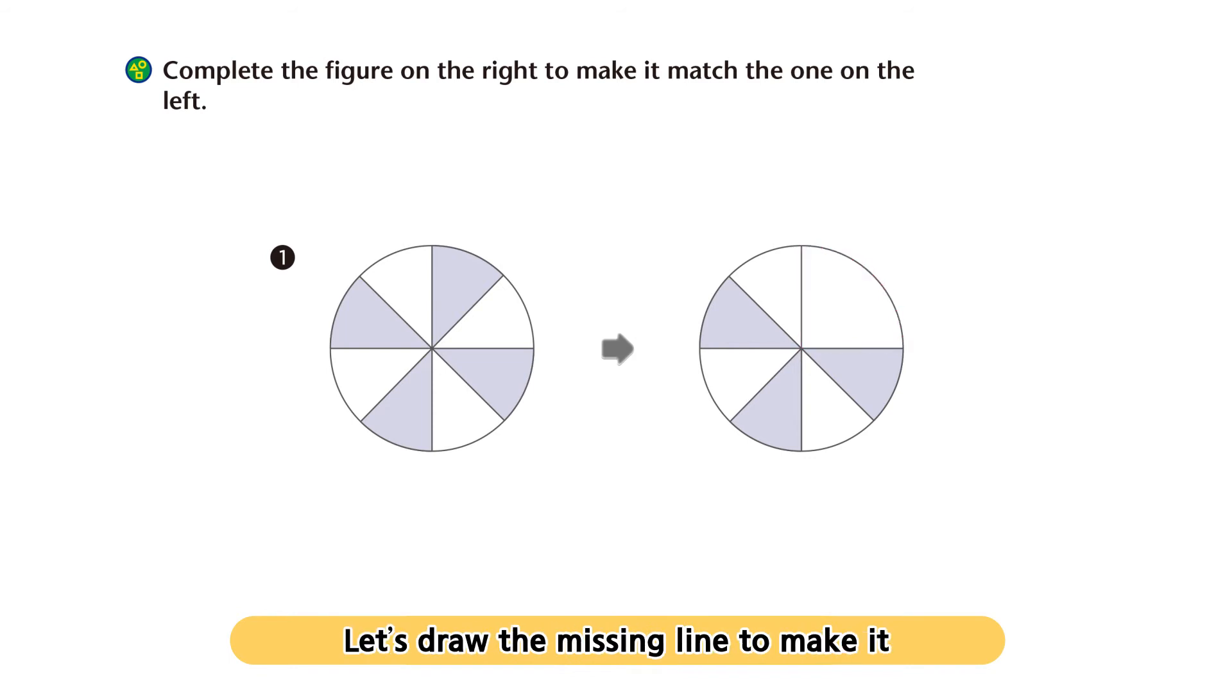Let's draw the missing line to make it look the same first. Then, find the part that needs color and shade it. How's that? Now the two figures are the same.